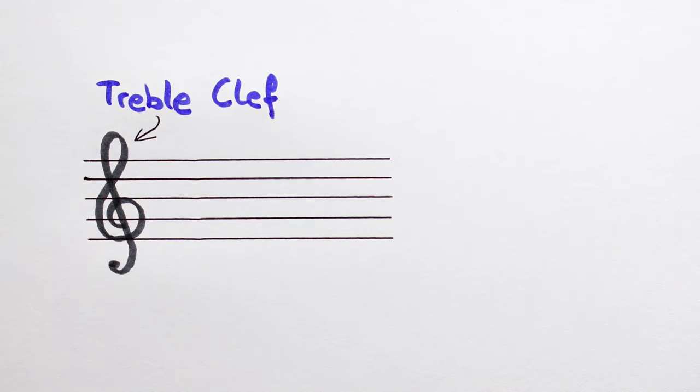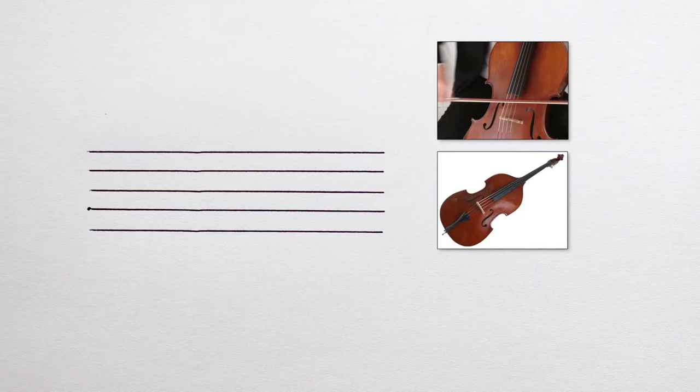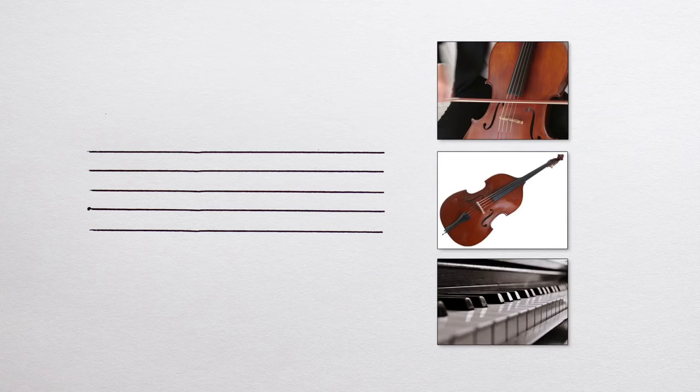So we know the treble clef is used by high pitched instruments like the violin, flute and the upper half of the piano. But some instruments play low sounds, the cello, the double bass and the lower half of the piano, amongst others.